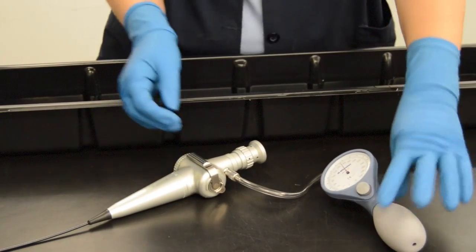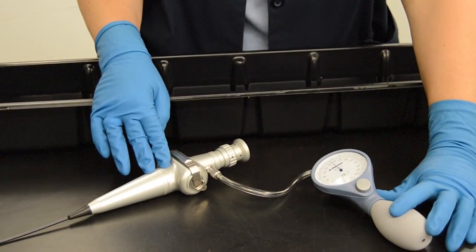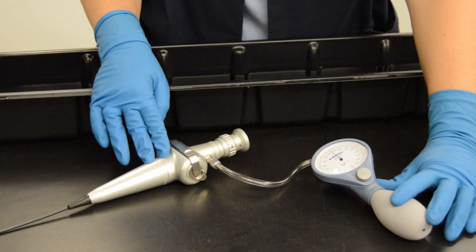Observe the needle for 10 seconds. If the needle drops, the leak tester connection to the endoscope may be loose. Repeat procedure to verify.